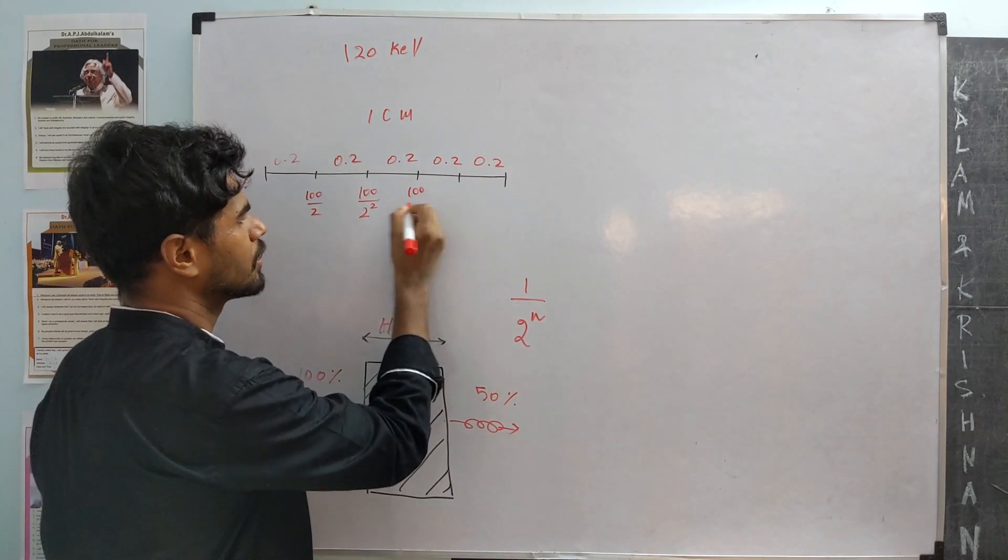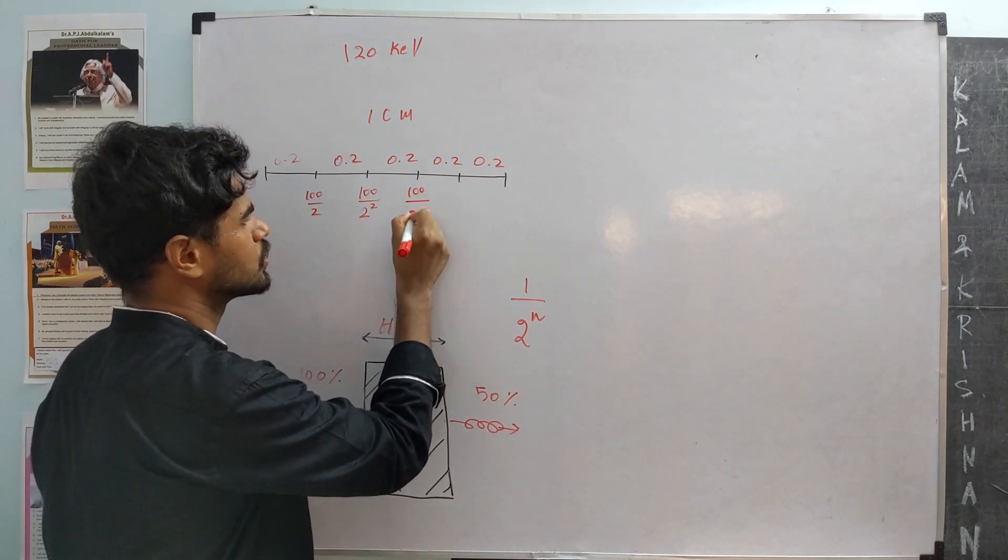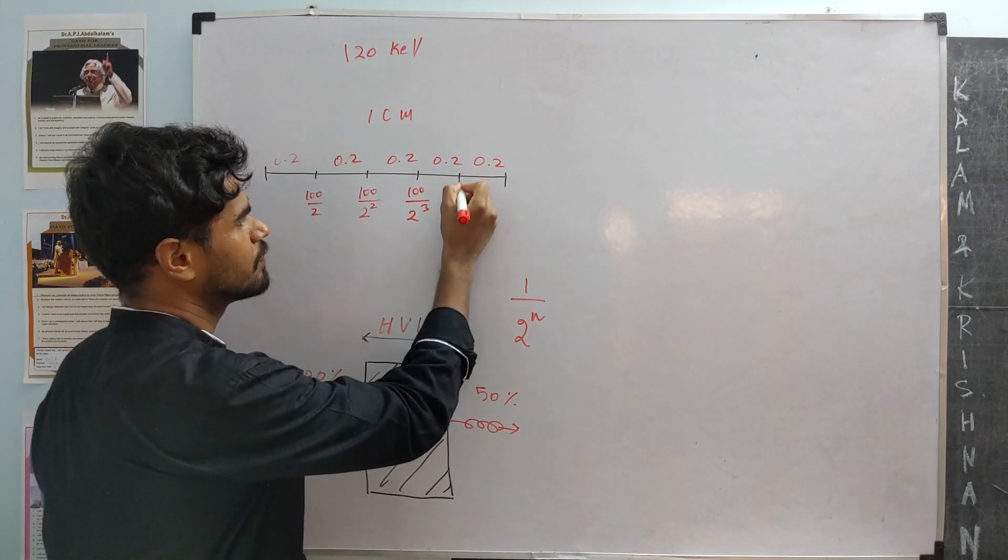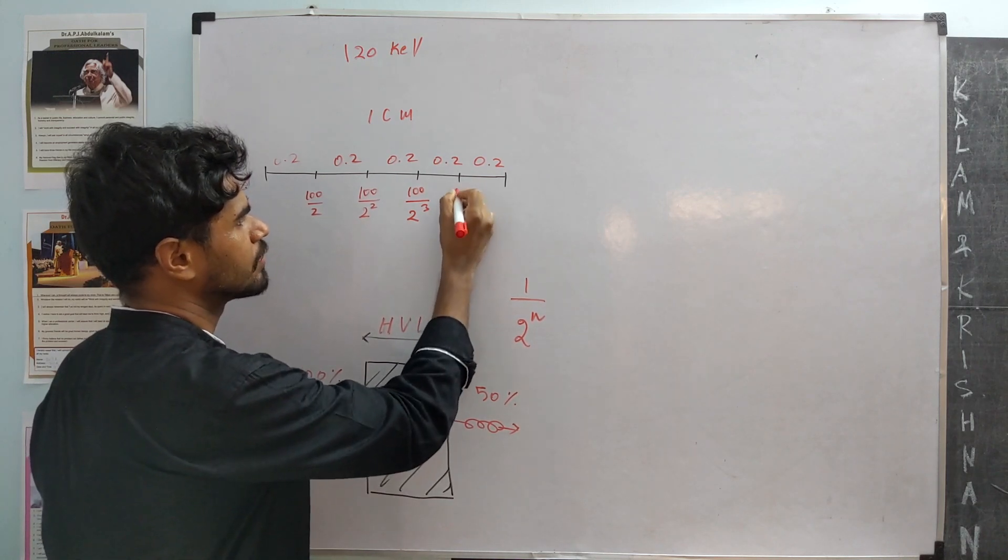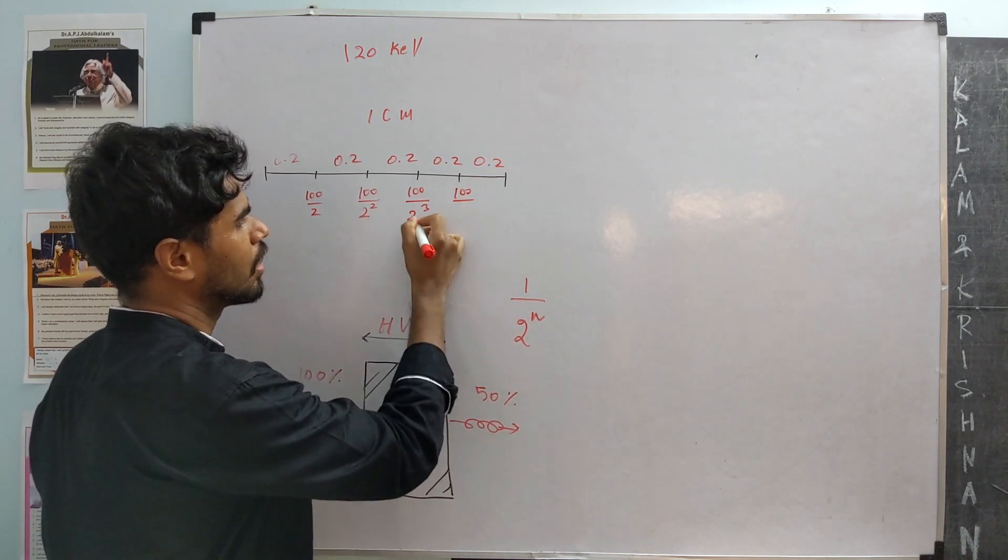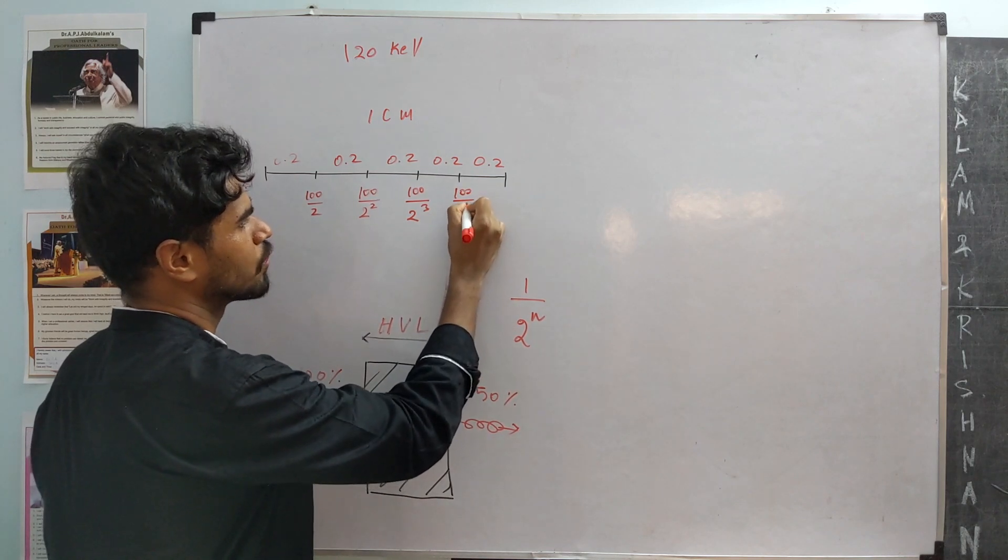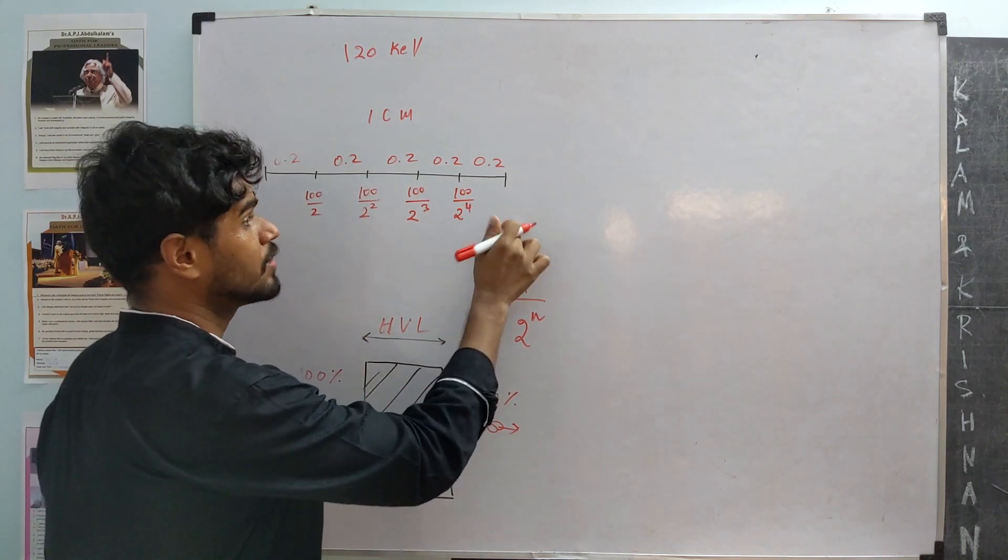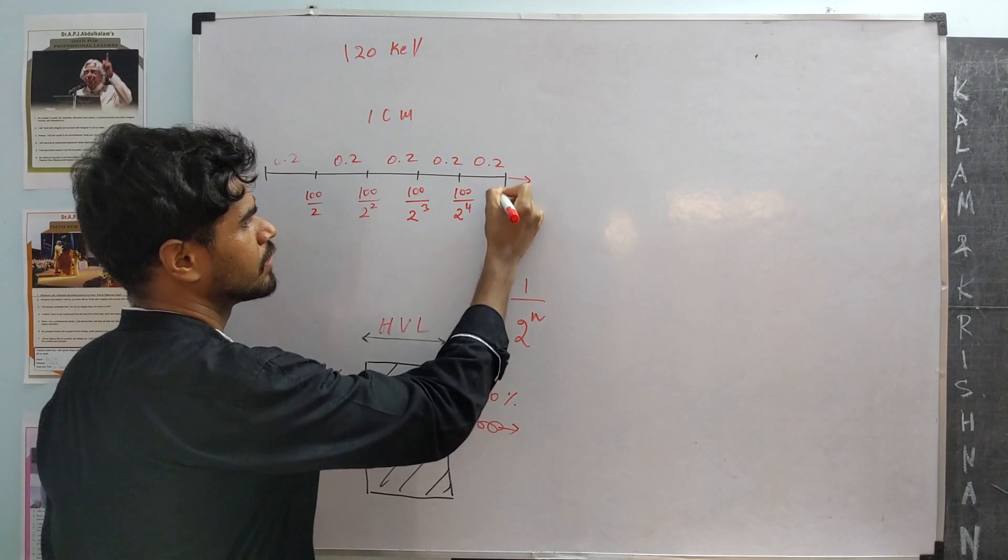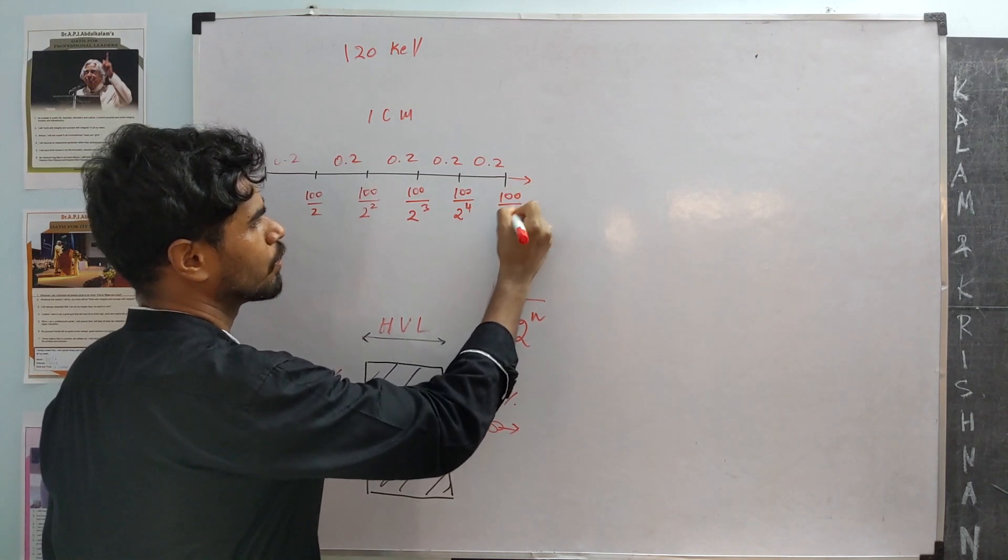which is 2 power 3. By the time we exit this side, we are left with 100 by 2 power 4. By the time we exit this side, we are left with 100 by 2 power 5.